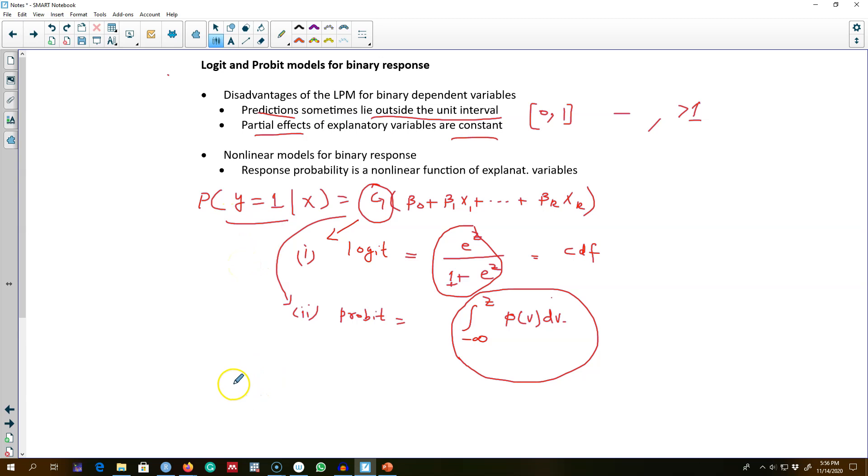One thing to note here is that you cannot get the magnitude of your slope coefficients straightforwardly by estimating either logit or probit model. To get the magnitude, you have to calculate average partial effects or average marginal effects.